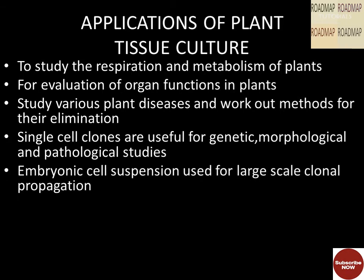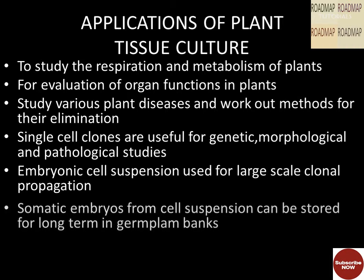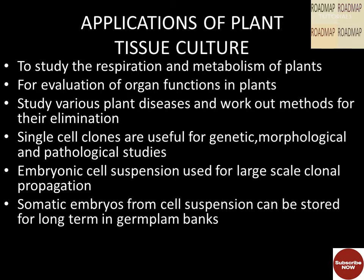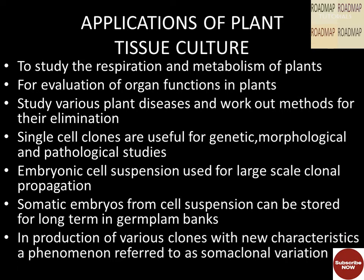Embryonic cell suspensions are used for large-scale clonal propagation. Somatic embryos from cell suspensions can be stored for a long time in the germplasm bank. Plant tissue culture is also used for the production of various clones with new characteristics, a phenomenon referred to as somaclonal variation.